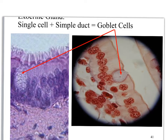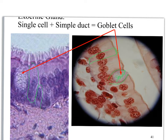We've seen this picture before — you've got your goblet cell right here and you can see its opening. Over here we've got simple columnar epithelium with cilia on the surface. Actually, this is PCCE, because you can see the nuclei are not lined up neatly. So it's pseudostratified ciliated columnar epithelium.